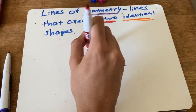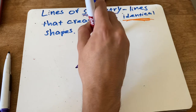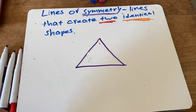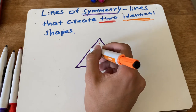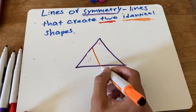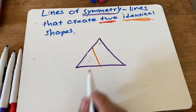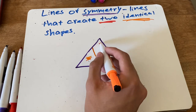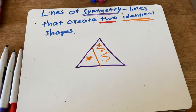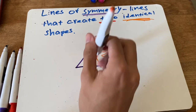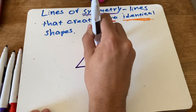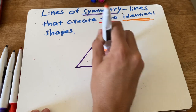What if I drew the orange line like this — is this a line of symmetry? No, absolutely not. This shape is not the same as the shape on the other side, so the orange line is not a line of symmetry.